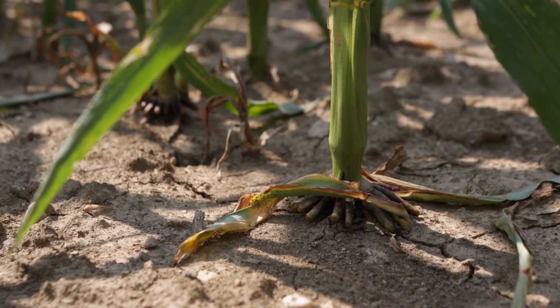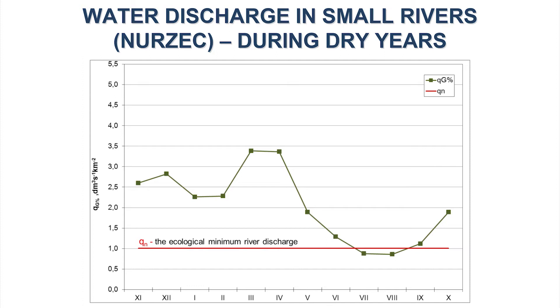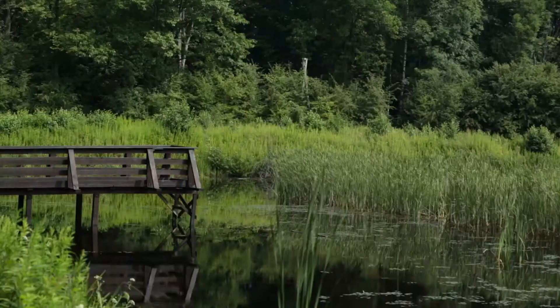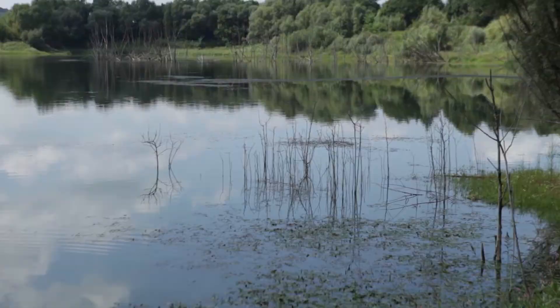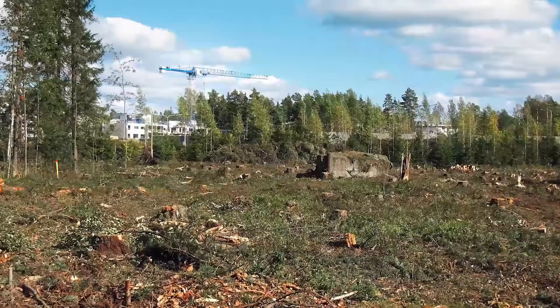In some regions, water discharge in small rivers is less than ecological flow. Theoretically, during that period it is not allowed to take water for irrigation from such rivers. That is the reason we have to retain water in the winter and spring season to use it during summer — the growing season.